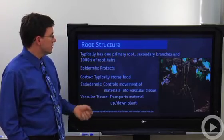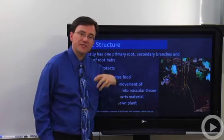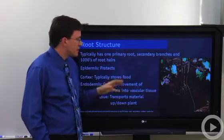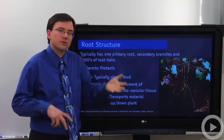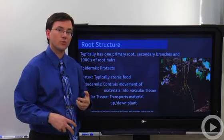Roots, on the other hand, have one primary root with a bunch of secondary roots coming off of it with thousands of root hairs coming off of individual cells. The purpose of the root hair is to give a much greater surface area to volume ratio to allow the plant to absorb a lot more water from the soil.